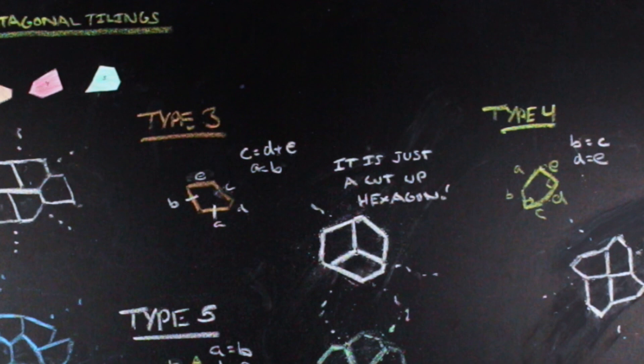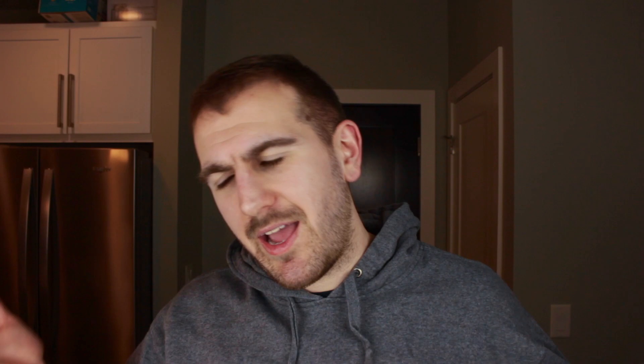My favorite of these is probably Reinhardt's third solution because it illustrates a common thing mathematicians try to do when proving something. If you look at the third solution, you might notice that the primitive is just a hexagon cut up in a special way so that each piece is a pentagon. Reinhardt either intentionally or unintentionally took something he knew could tile the plane and broke it into smaller pieces that together form something that also tiles the plane — taking a simpler solution and forcing it to work for the more complicated pentagon case.